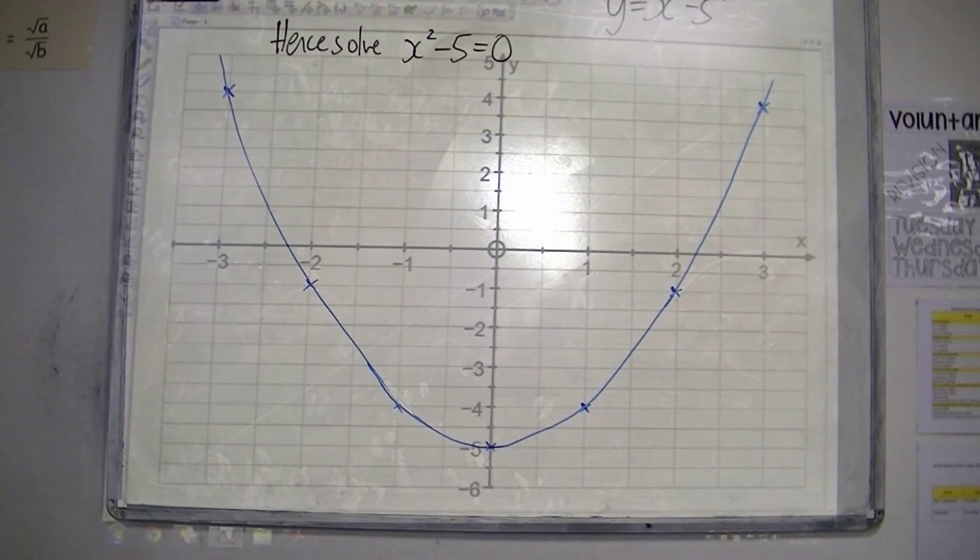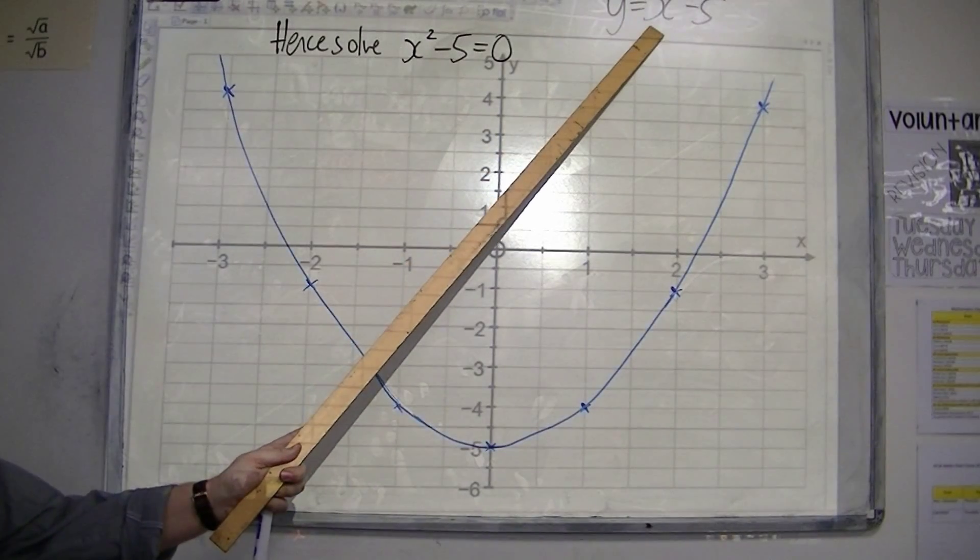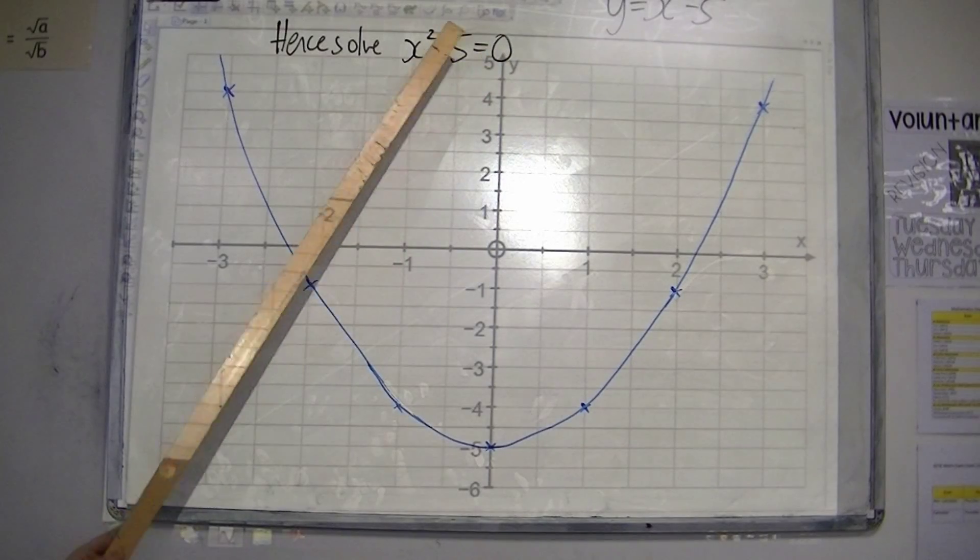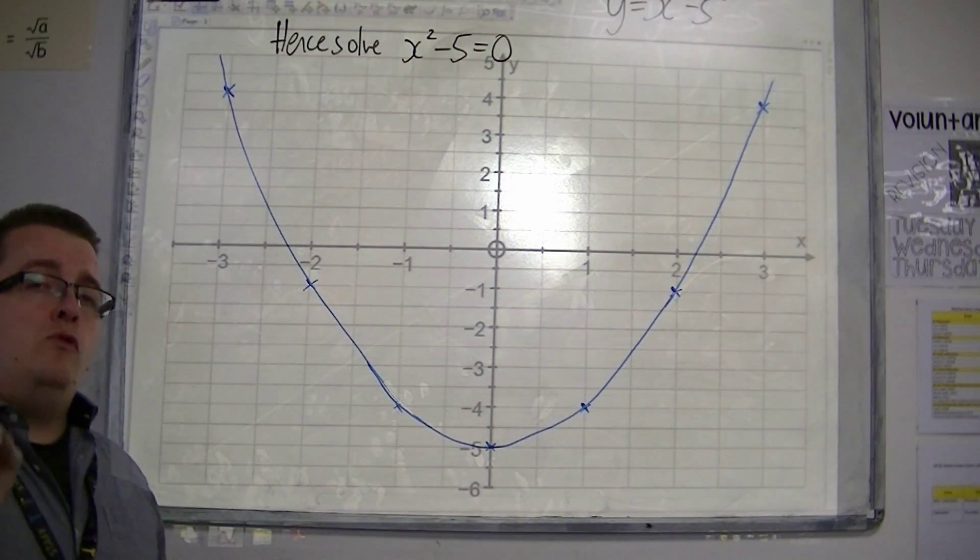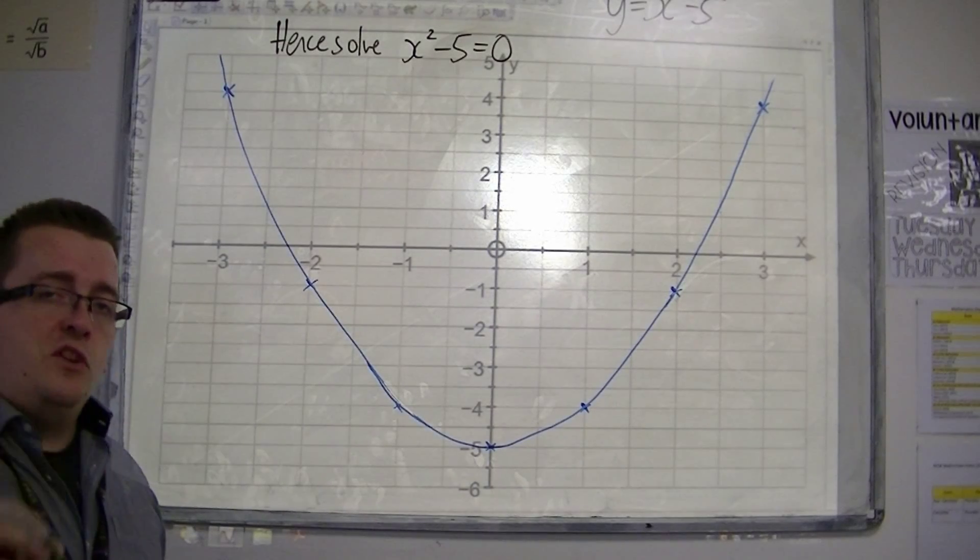There's definitely a link between the curve that we had, the y equals x squared minus 5, and the equation that we now need to solve. But we're going to have to use the graph that we've drawn in order to solve it.